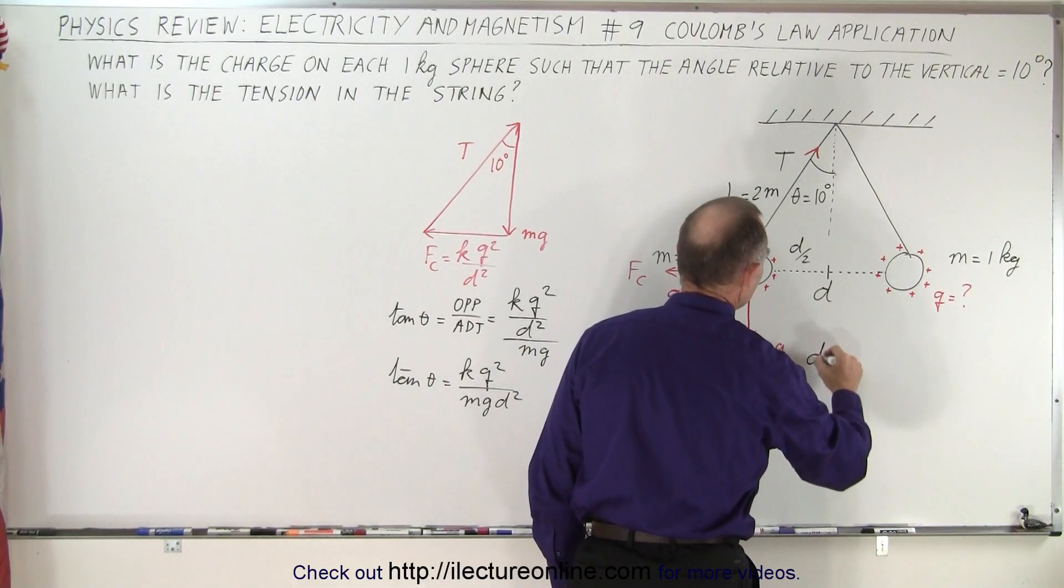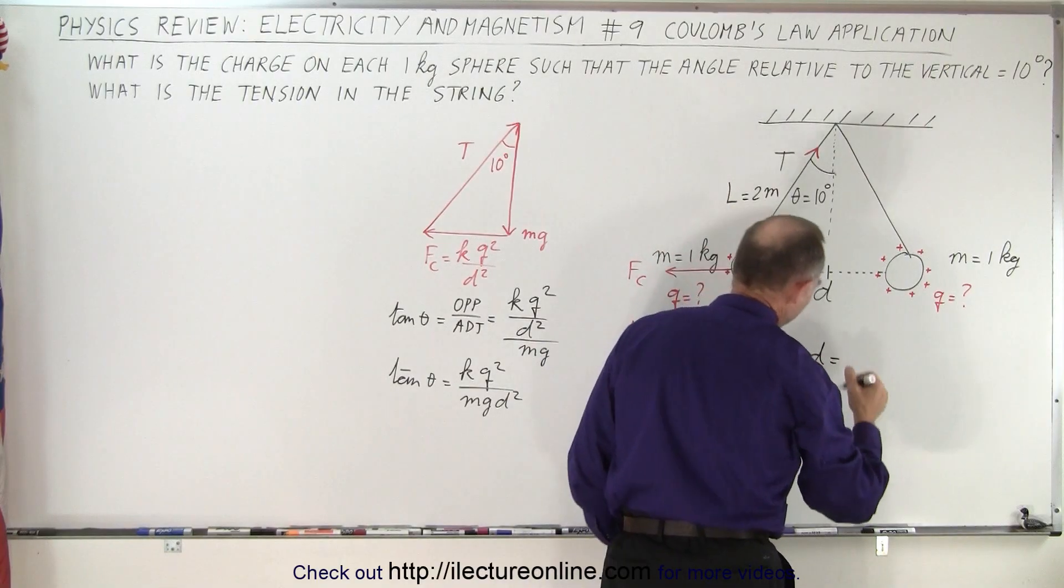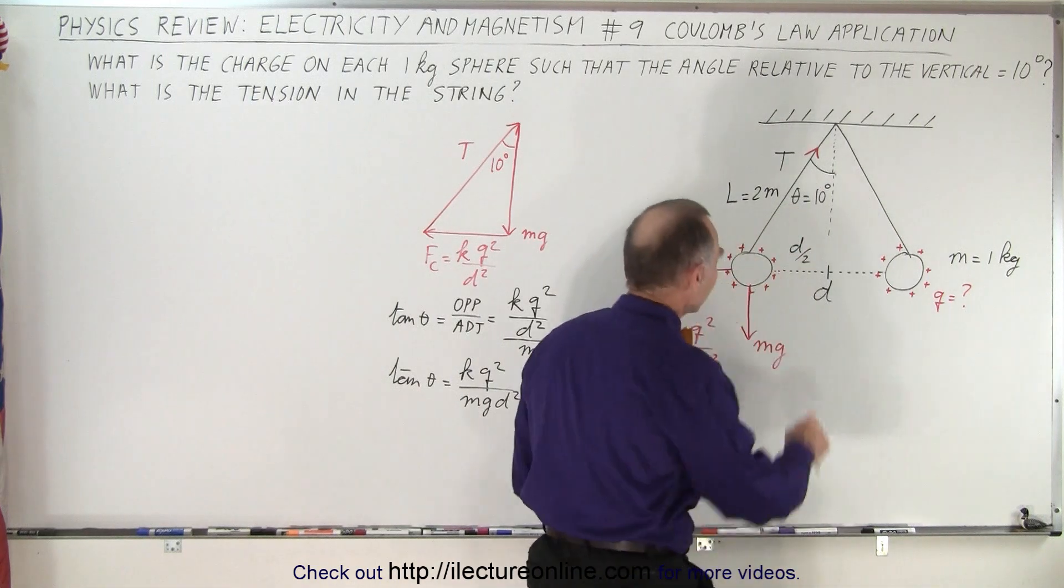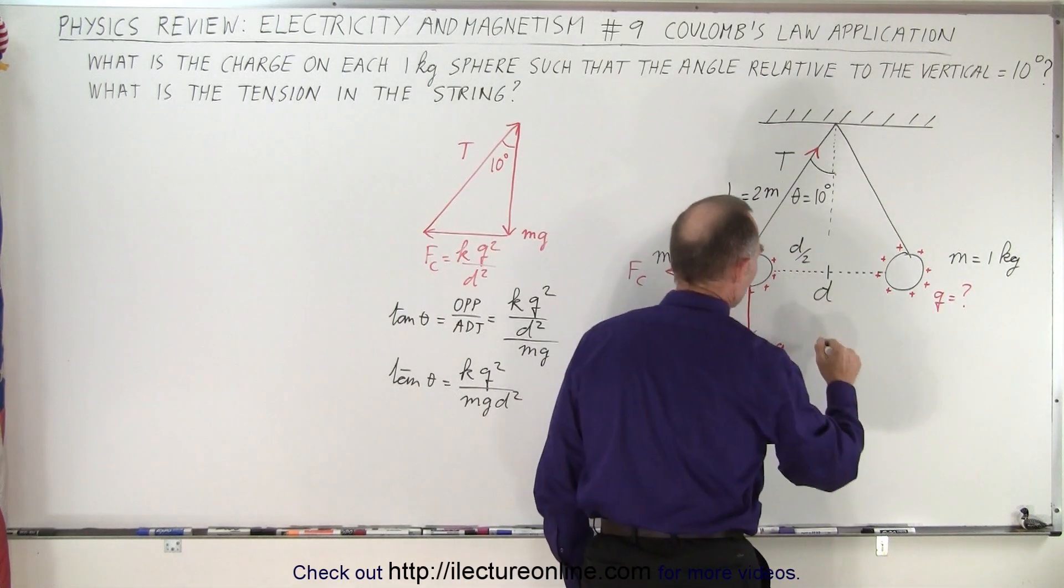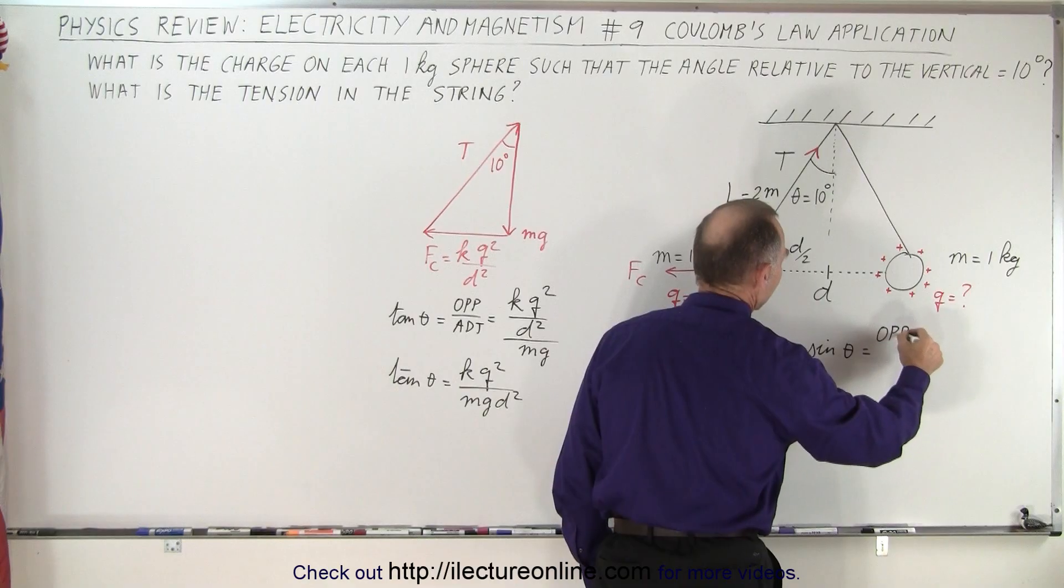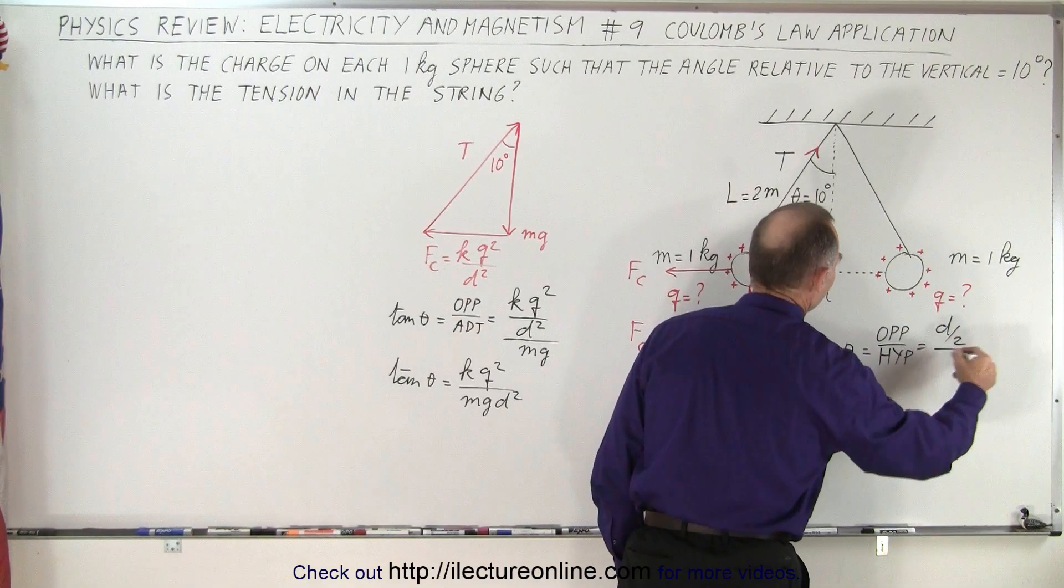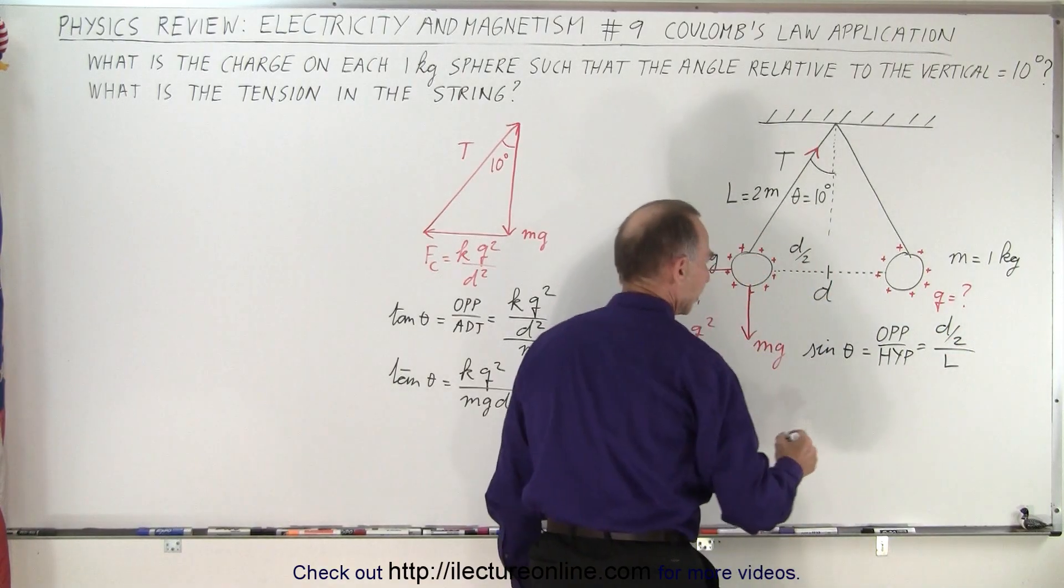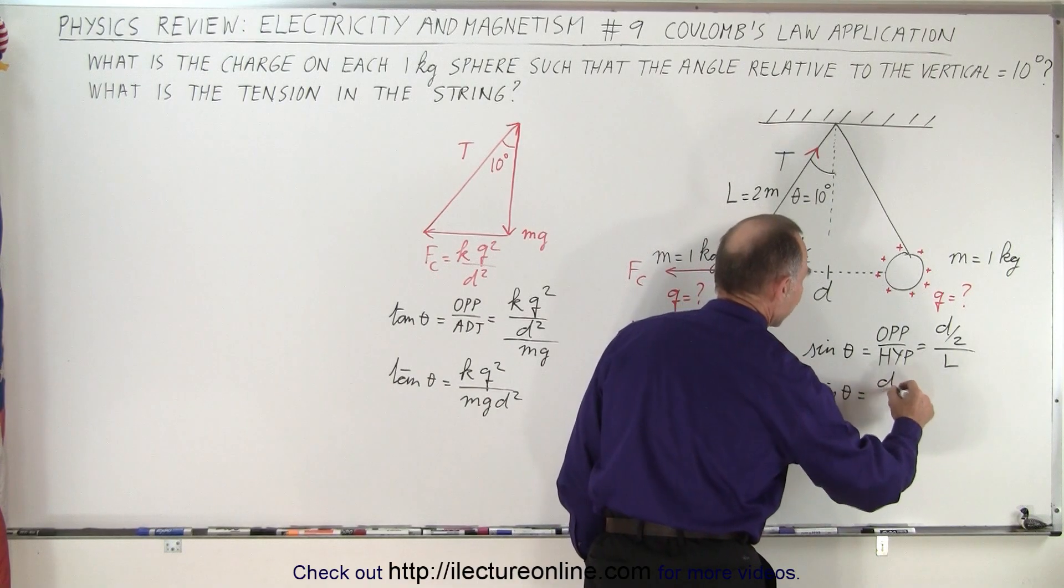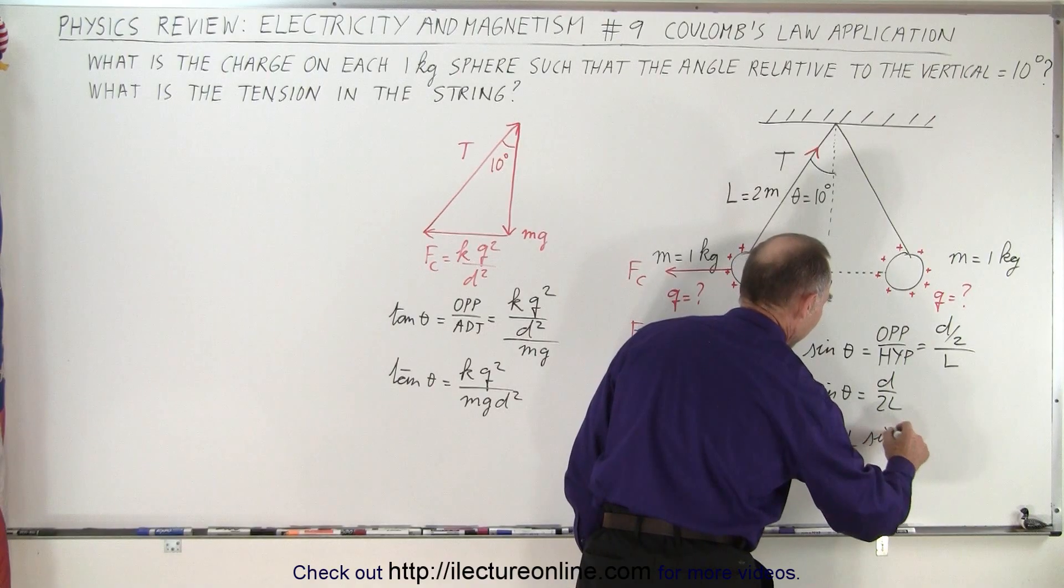We can then say that D, which is the opposite side of the angle right here, is going to be equal to, or better yet, it's probably better to go like this. Since we're dealing with the opposite side, we want the sine. So the sine of theta is equal to the ratio of the opposite side divided by the hypotenuse, which means it's equal to D over 2 divided by L. And so then we can say that sine of theta is equal to D divided by 2L, or D is equal to 2L times the sine of theta.